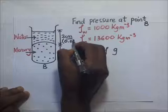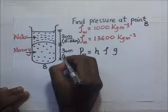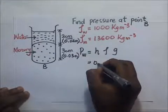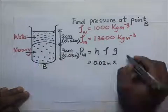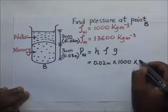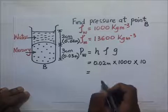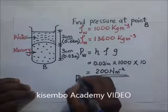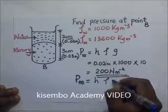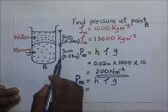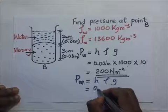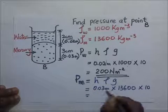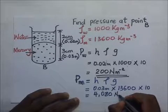Similarly, converting 3 centimeters to meters gives 0.03 meters. The pressure exerted by water is 0.02 meters × 1000 kg/m³ × 10 = 200 N/m². The pressure exerted by mercury is 0.03 meters × 13,600 kg/m³ × 10 = 4080 N/m².